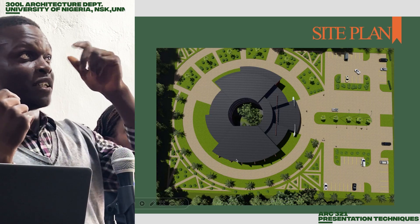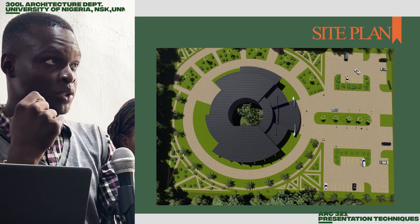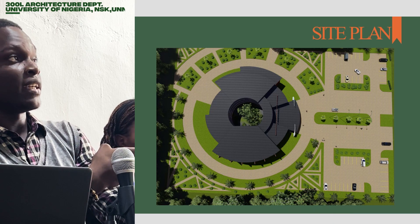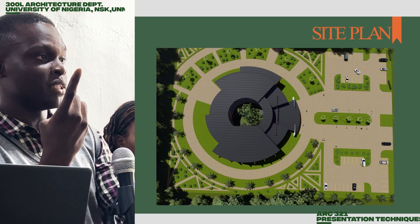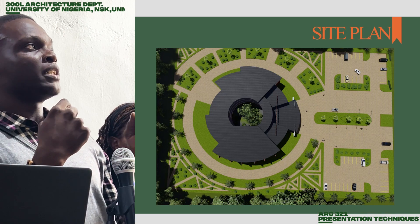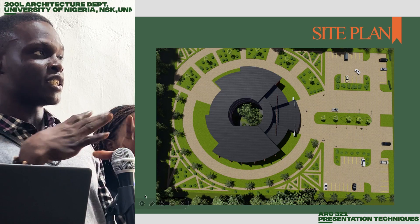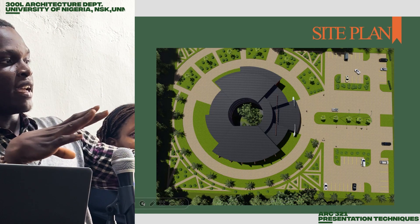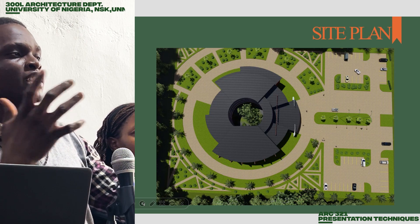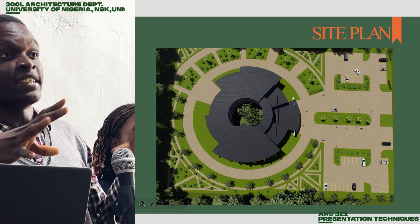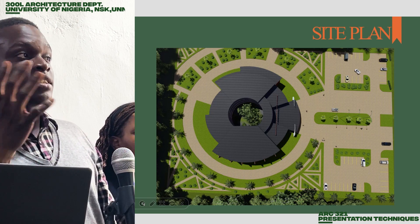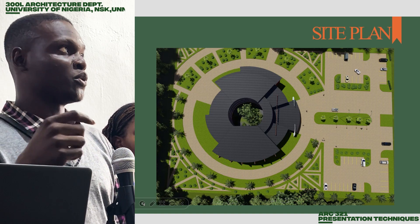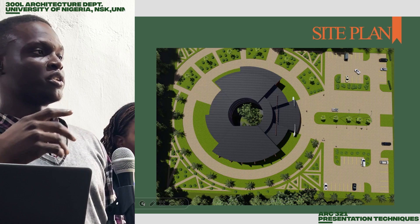This is the site plan of the building. The building is 110 by 130 meters. We observed a concentric radial arrangement, and the edges were designed accordingly since we decided to situate it here in Enugu. Since the cultural heritage center is trying to display culture, we went ahead to make the design tell the story.